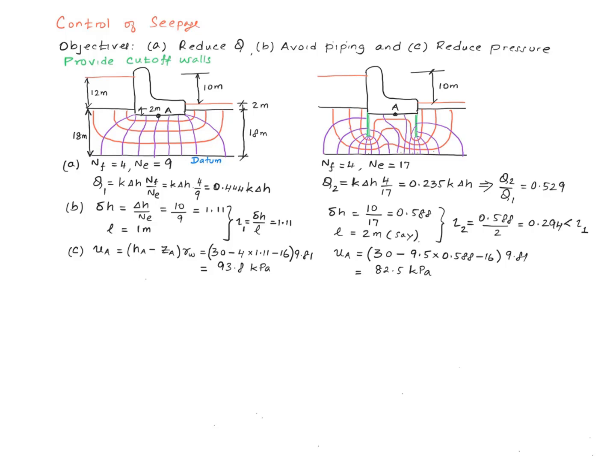The hydraulic gradient in this region works out to be about 1.11, whereas here it's 0.294. So it's definitely much less than the hydraulic gradient over here, and therefore it minimizes the potential for piping.